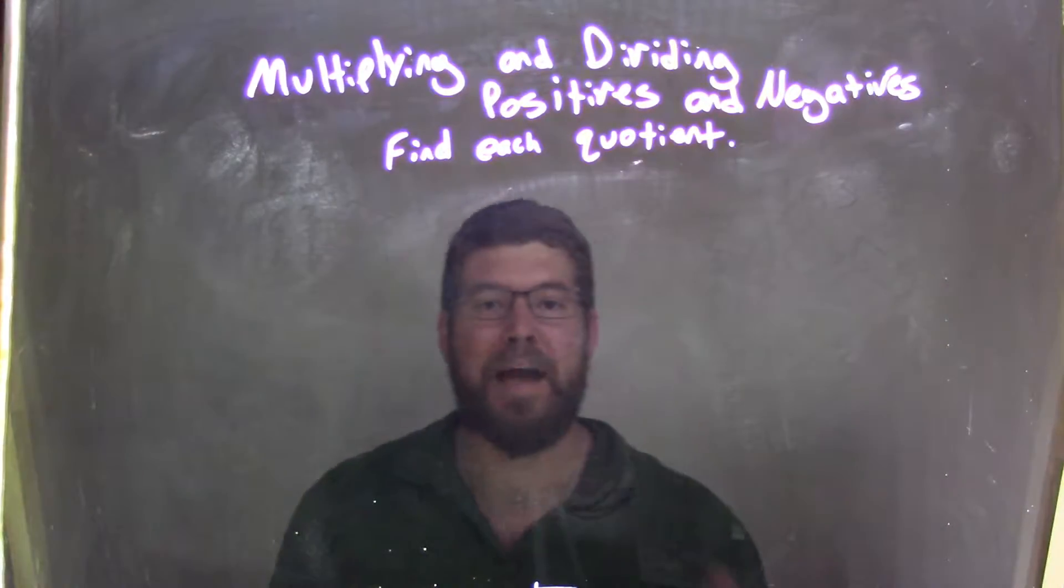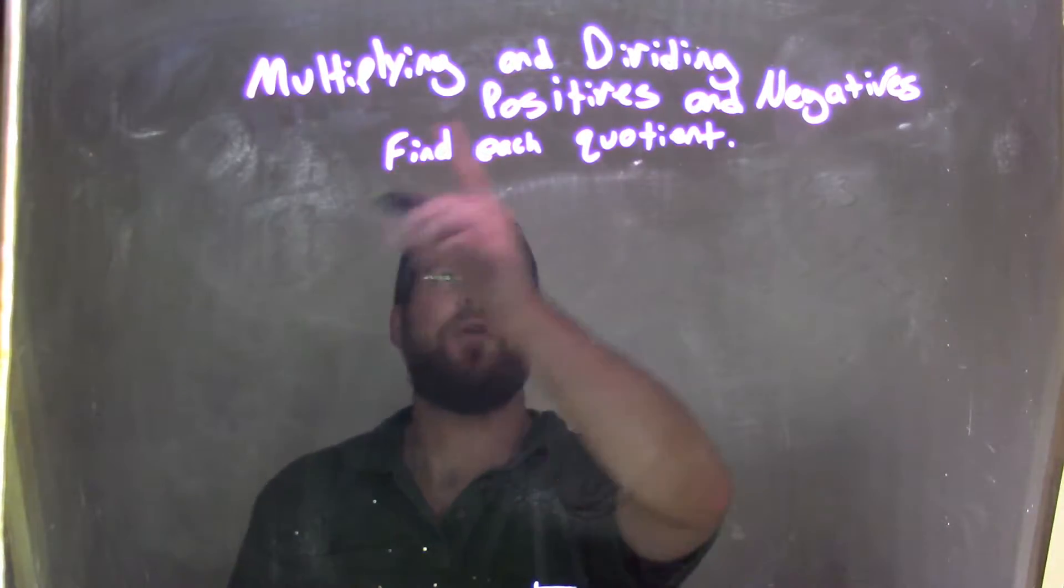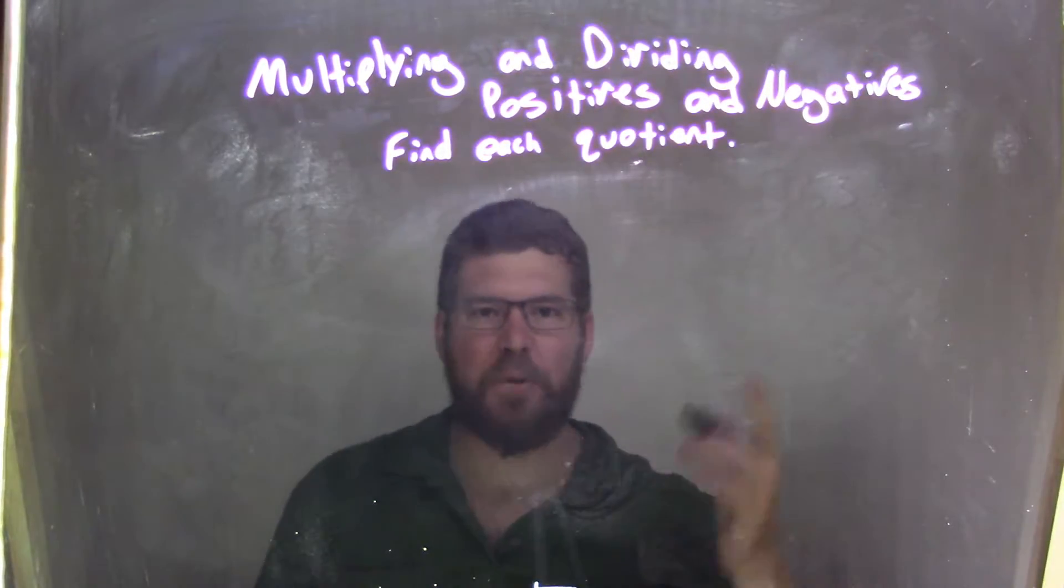Hi, I'm Sean Gannon, and this is Minute Math. Today we're going to learn about multiplying and dividing positives and negatives, and we want to find each quotient.